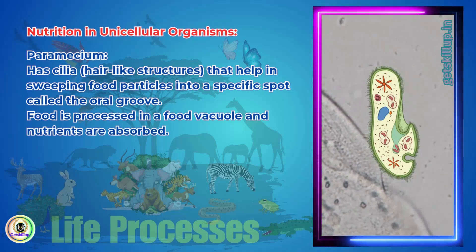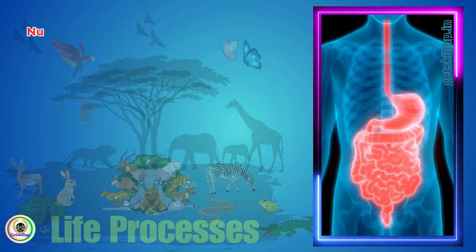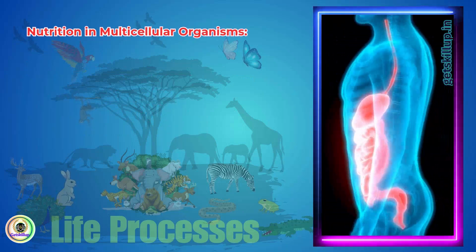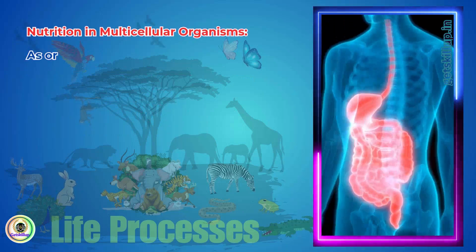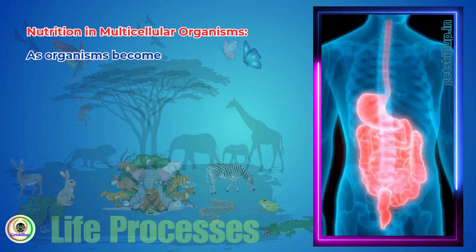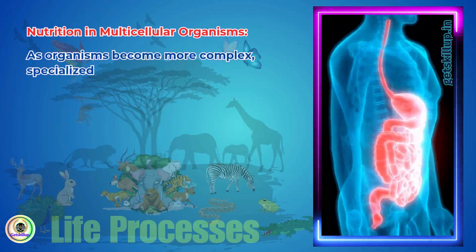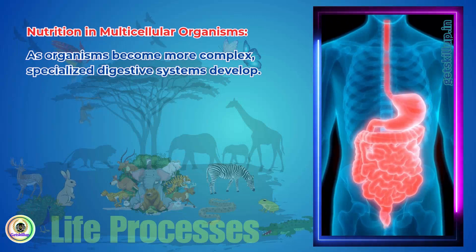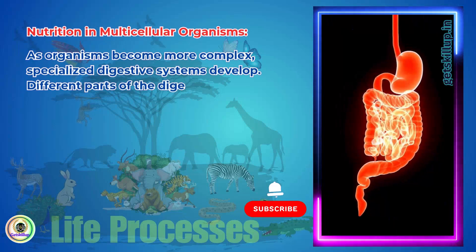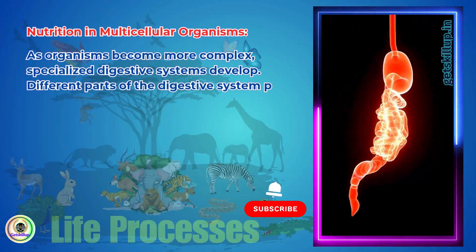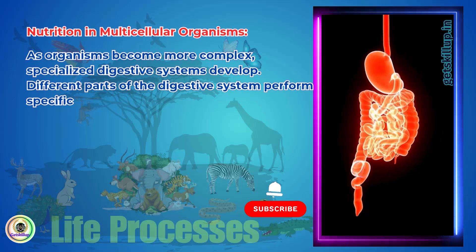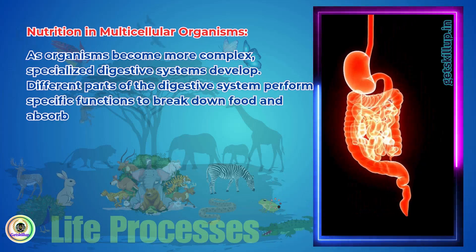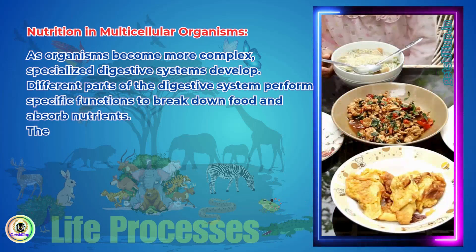Nutrients are absorbed from the food vacuole. Nutrition in multicellular organisms: as organisms become more complex, specialized digestive systems develop. Different parts of the digestive system perform specific functions to break down food and absorb nutrients.